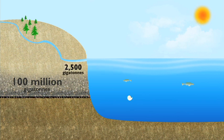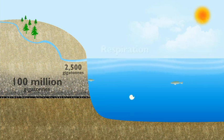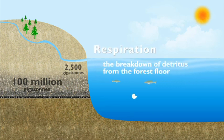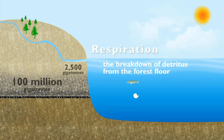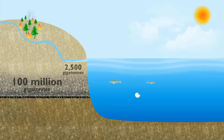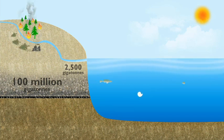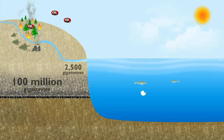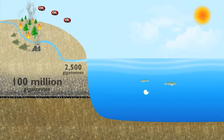A further 2,500 gigatons is found within the soils and all the life found within our biosphere, which includes the forests, a major absorber of carbon atoms. However, this process is reversed during respiration, the breakdown of detritus from the forest floor, or through burning — which can take place during mass human-induced deforestation.